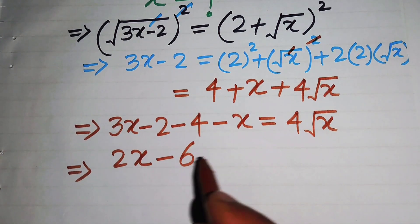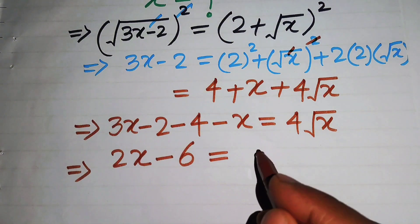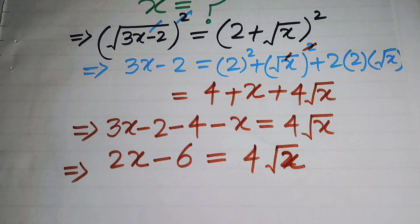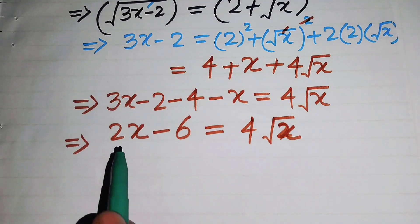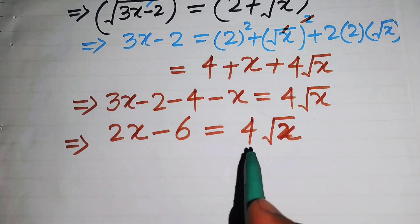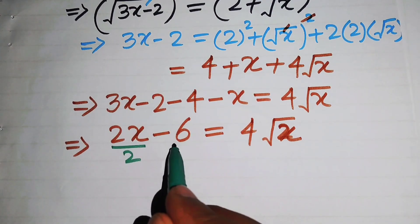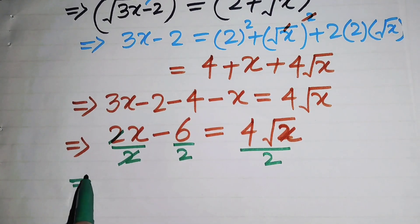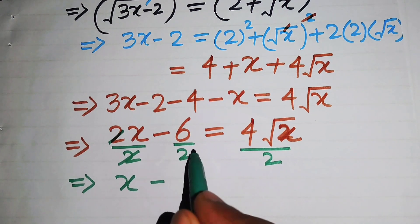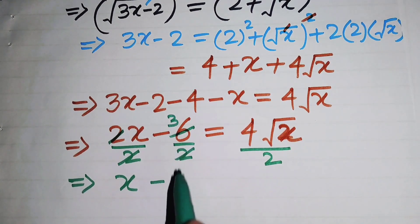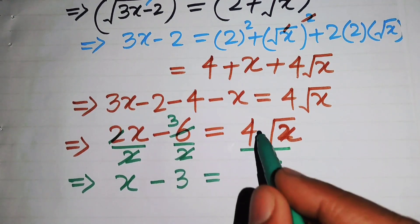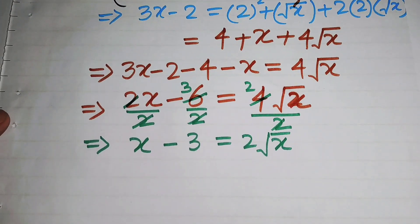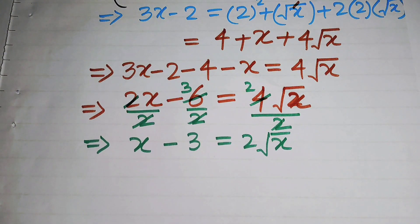We add and subtract like terms: 3x minus x becomes 2x, and minus 2 minus 4 becomes minus 6, giving 2x minus 6 equals 4 times the square root of x. We then divide both sides by 2, obtaining x minus 3 equals 2 times the square root of x.